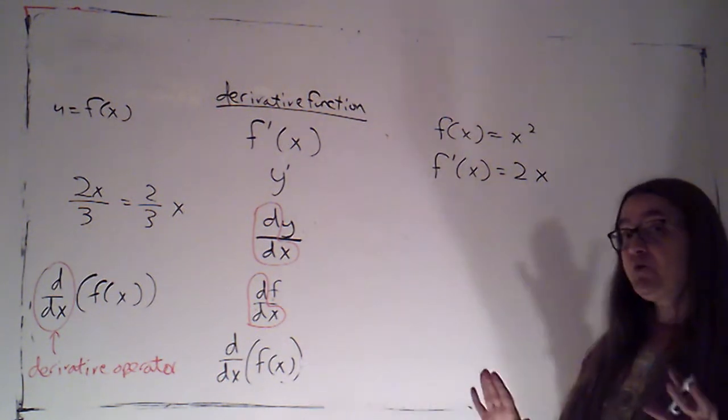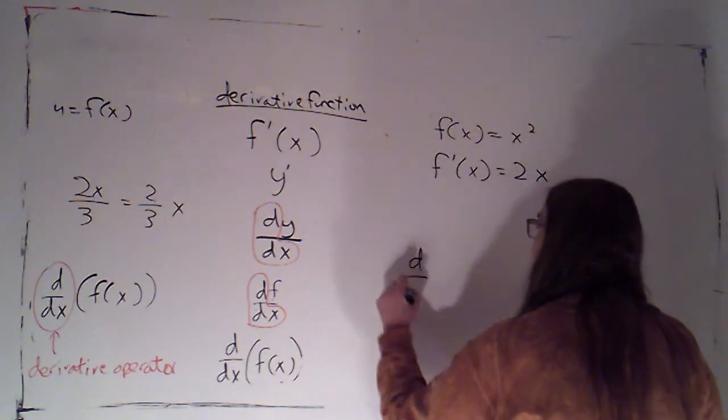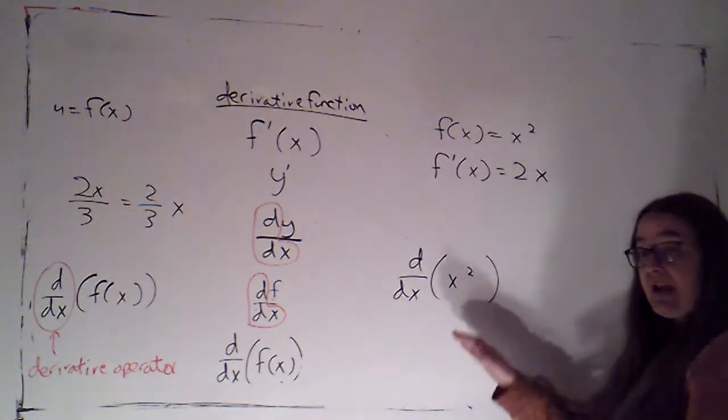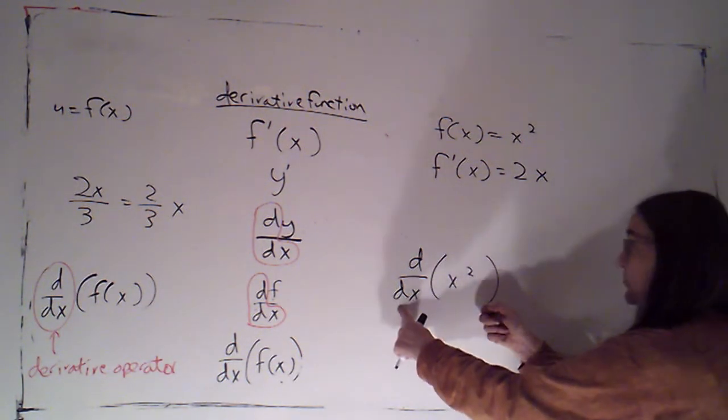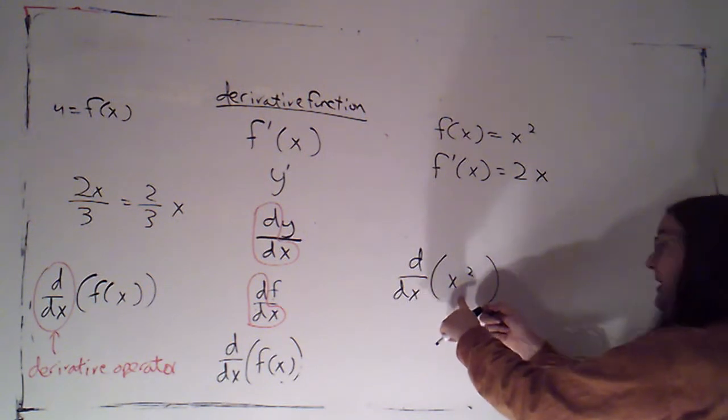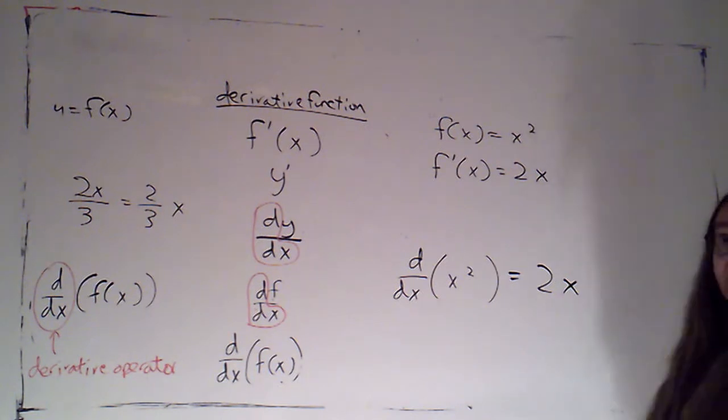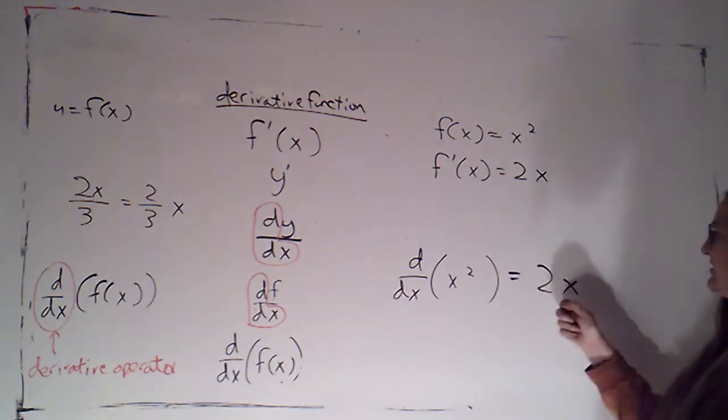If I use this notation, I can give you both pieces of information in one equation. Because I can say the derivative, and instead of writing the name of the function, I can put the formula for the function. This says the derivative of x squared is equal to 2x. It's one equation that contains two pieces of information. The original function is the squaring function. Its derivative is 2x.